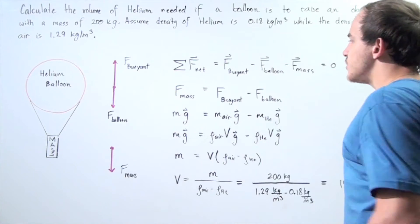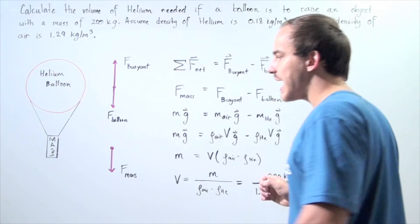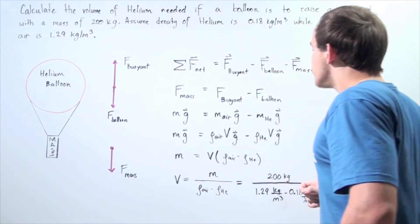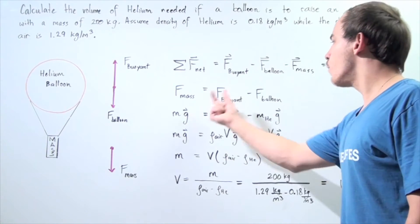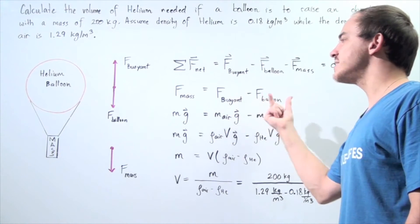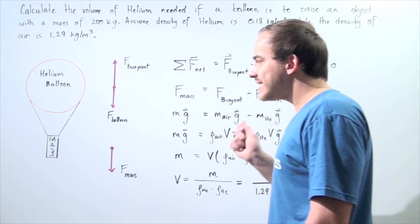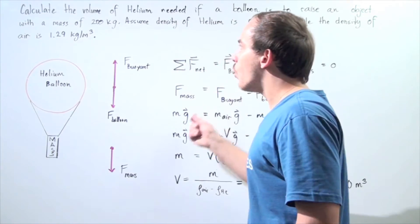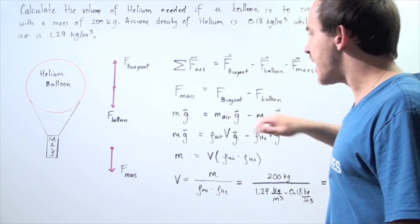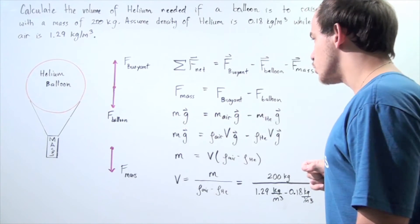Let's rearrange this equation and solve for the gravitational force acting on our mass. The force on the mass is equal to the buoyant force minus the force acting on the mass of the balloon. The mass of our object hanging from our balloon is 200 kilograms, represented by the letter M. So M times g is equal to what's the buoyancy force?